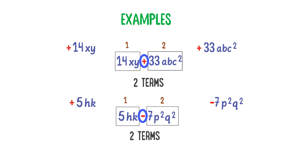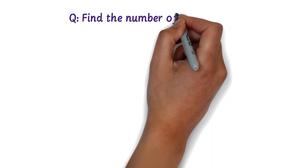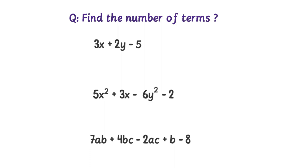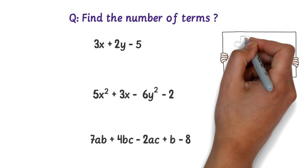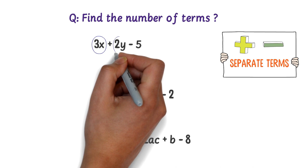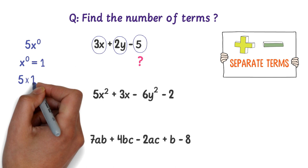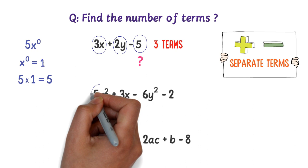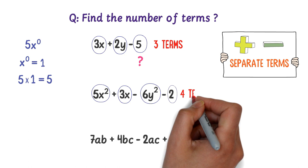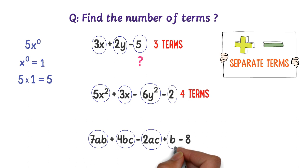Now let me take a quick test. Find the number of terms in the following questions. Pause the video and count them quickly. We have learned that positive and negative signs separate terms from each other. In the first expression there are three terms — and note that 5 can be written as 5X to the power 0, since X to the power 0 is 1, so 5 is also an algebraic term. In the second expression there are four terms. In the third expression there are five terms. Hence, positive and negative signs separate algebraic terms.